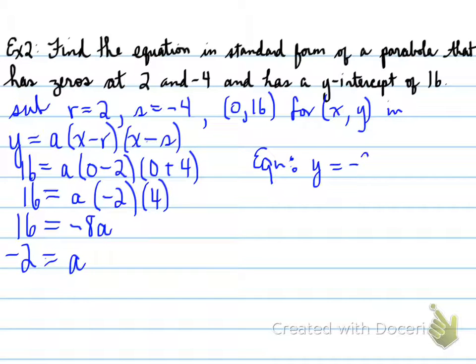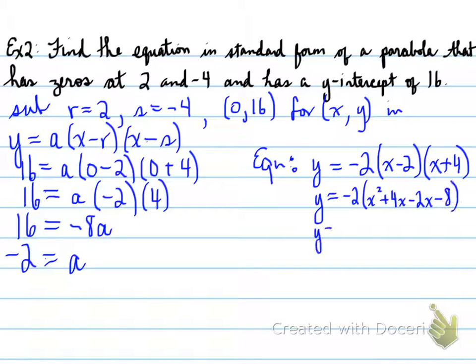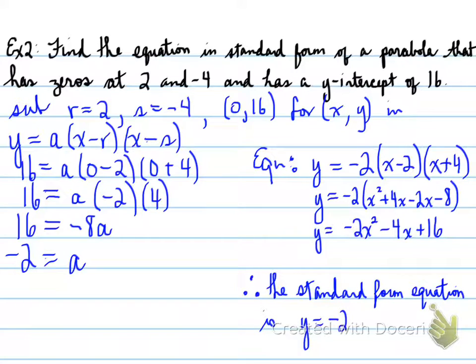So, our equation in factored form will be negative 2, x minus 2, times x plus 4, and then once you expand it, and then you're going to expand it again, so expand the double set of brackets, then move the negative 2 inside. This is what we get for the standard form. So, the standard form equation is going to be y equals negative 2x squared minus 4x plus 16 as our final statement.